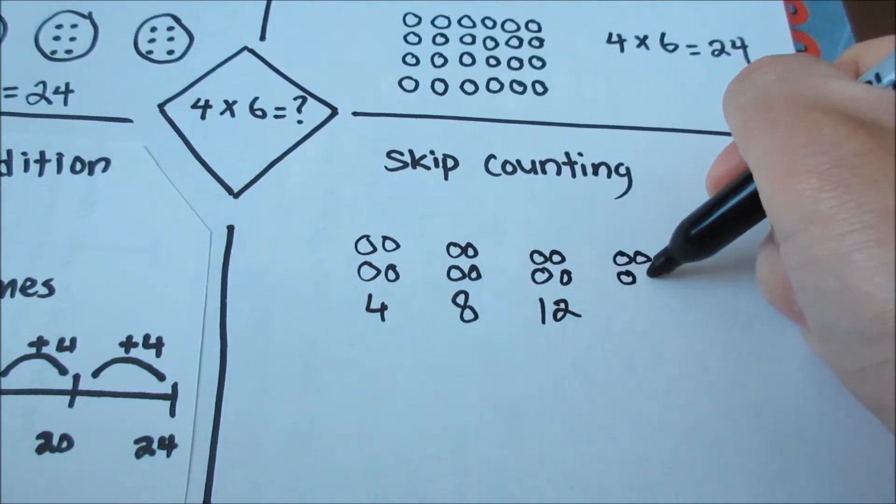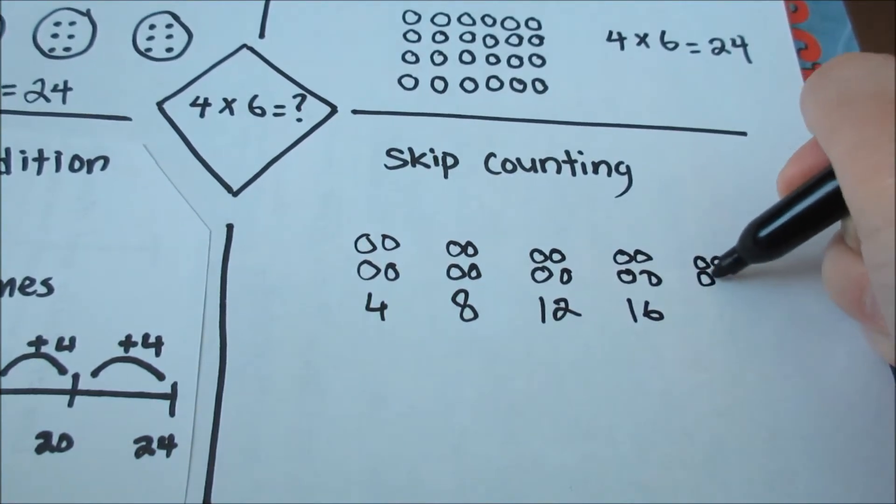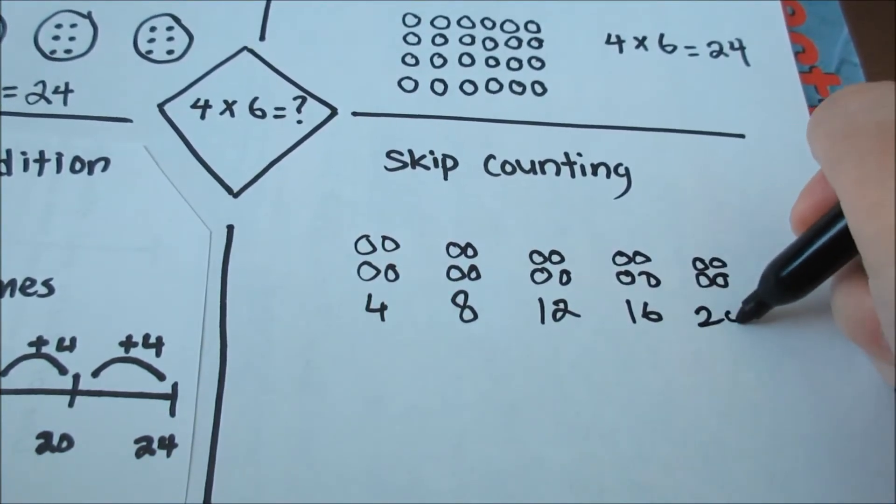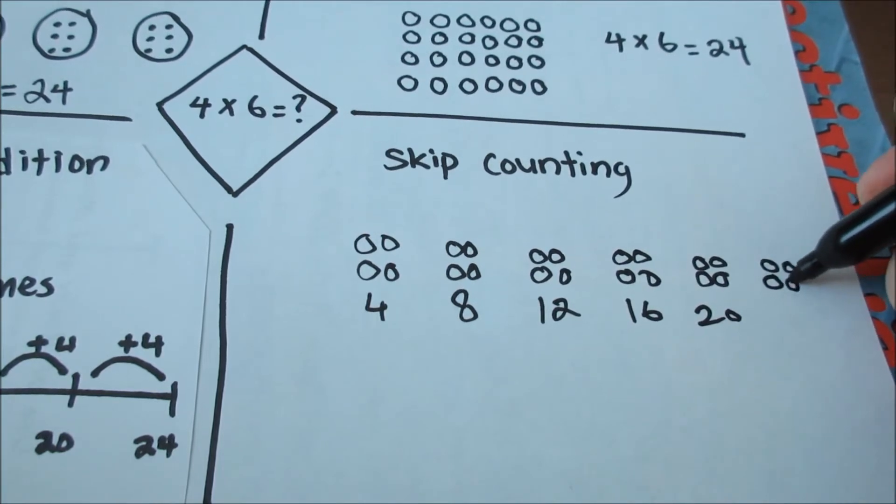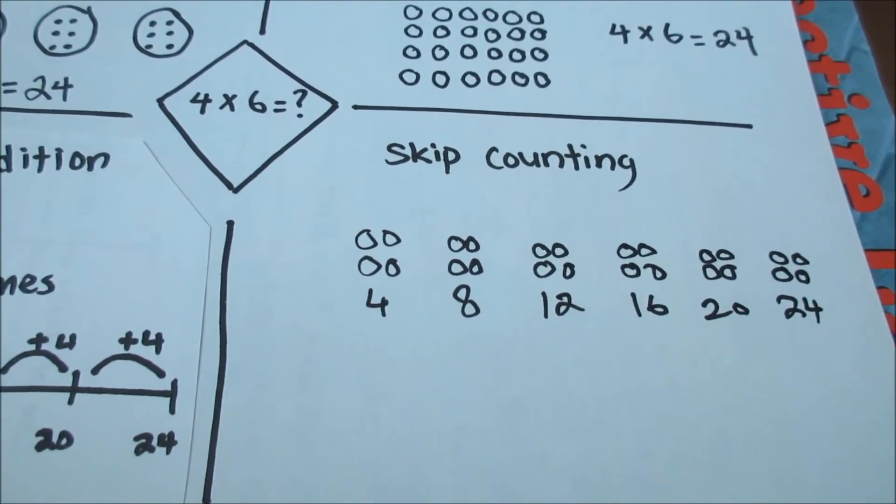16, 20, 24. So after counting 4 six times, I get to the number 24. Then I know that 4 times 6 is equal to 24.